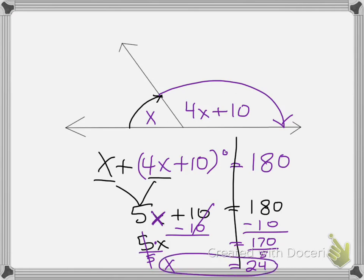So let's see if we're right. We're going to plug 24 in here. That's 24. It says x is 24. 4 times 24 here is going to be 96 plus 10, which is 106. 106 plus 24 does not give me 180.